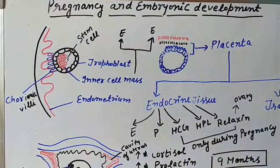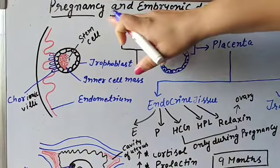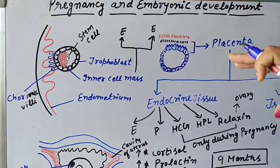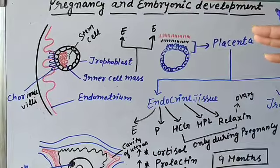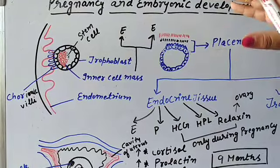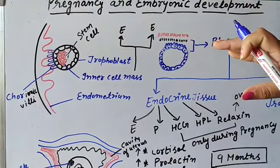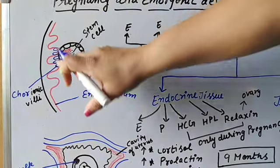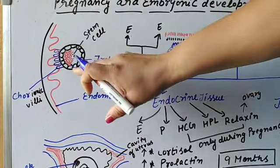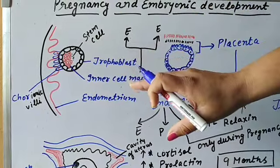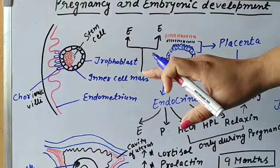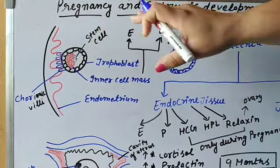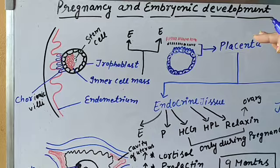Hello students, today we are going to discuss the topic pregnancy and embryonic development. In our last lecture we talked about implantation — the attachment of the blastocyst in the endometrium lining of the uterus. After that, changes take place in this blastocyst, and that process is known as pregnancy and embryonic development.